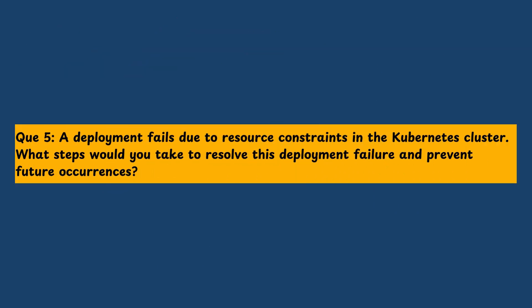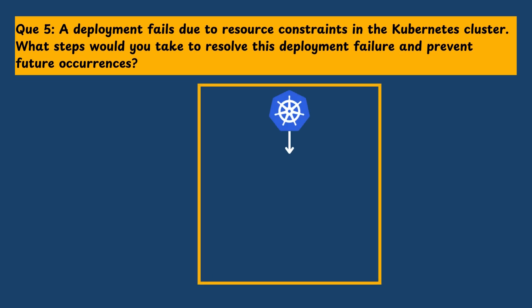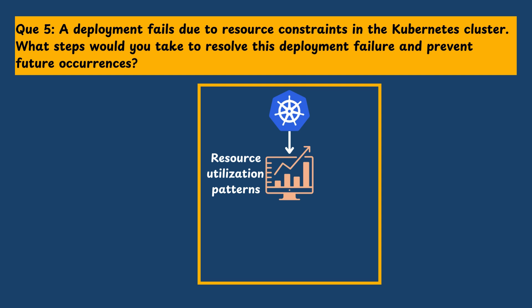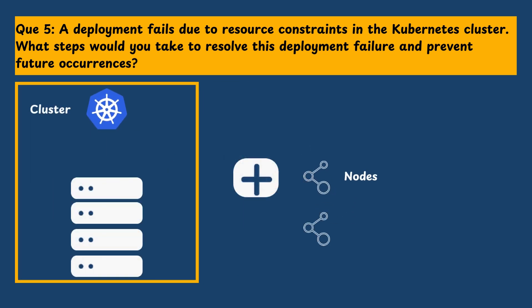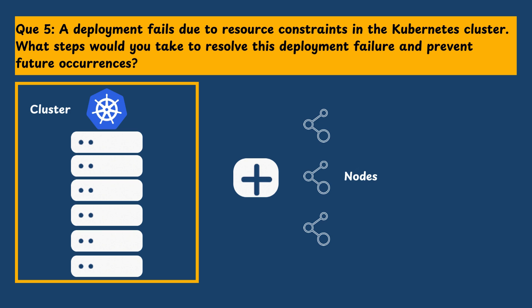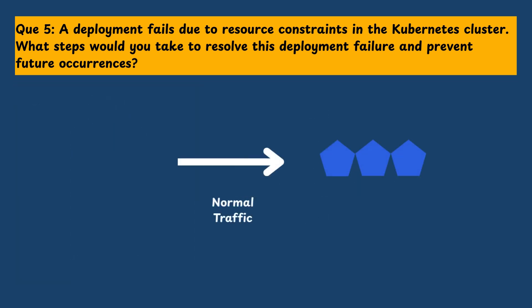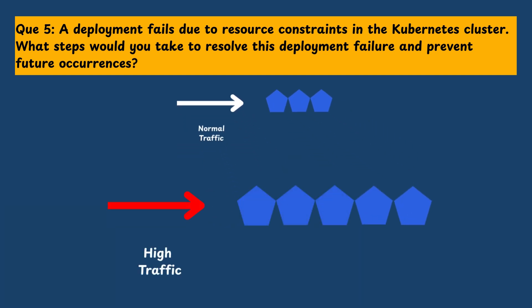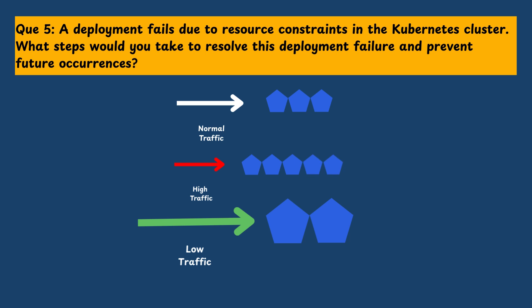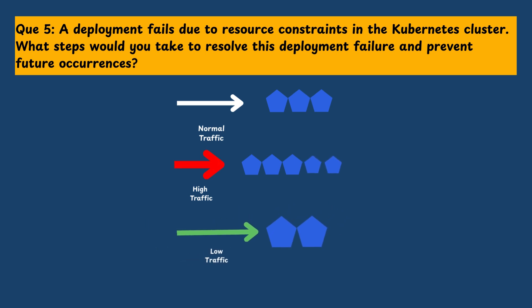Question 5: A deployment fails due to resource constraints in the Kubernetes cluster. What steps would you take to resolve this and prevent future occurrences? I would start by analyzing the resource utilization patterns in the Kubernetes cluster to identify any over-utilized nodes or pods. Then I would scale up the cluster by adding more nodes or upgrading existing ones to meet the resource demands. To prevent future occurrences, I would set up auto-scaling policies and resource quotas to dynamically adjust resources based on workload demands.